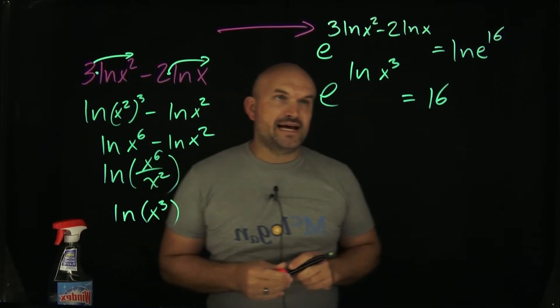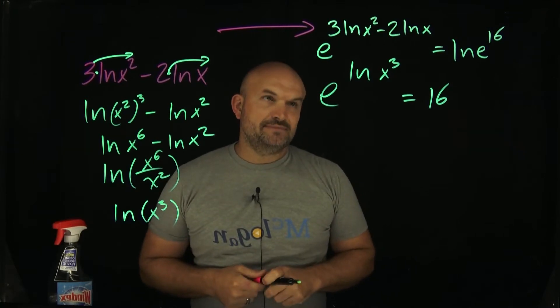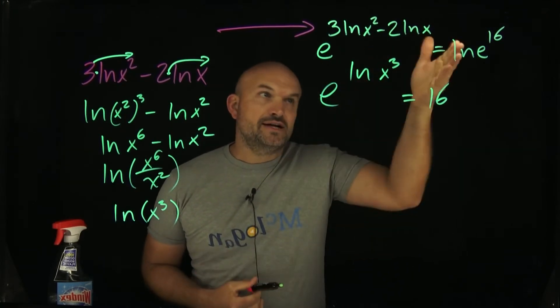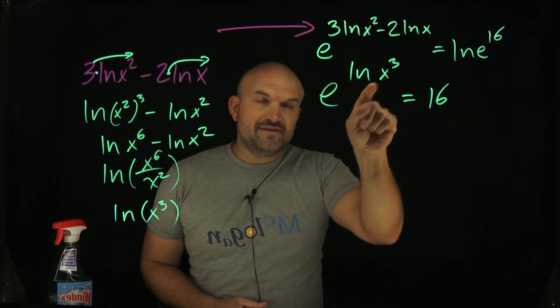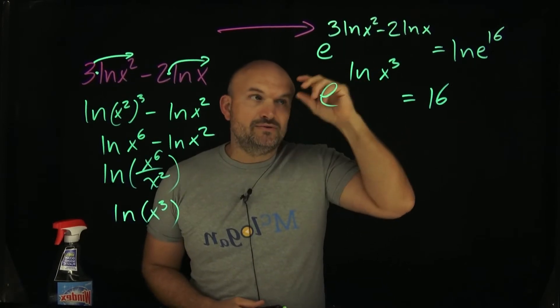Okay, so now we have e raised to ln of x cubed equals 16. So I need to solve for x. That's what we're trying to do. We're trying to solve for x. So to find the value of x, whenever it's in the power, you've got to take the log of both sides.